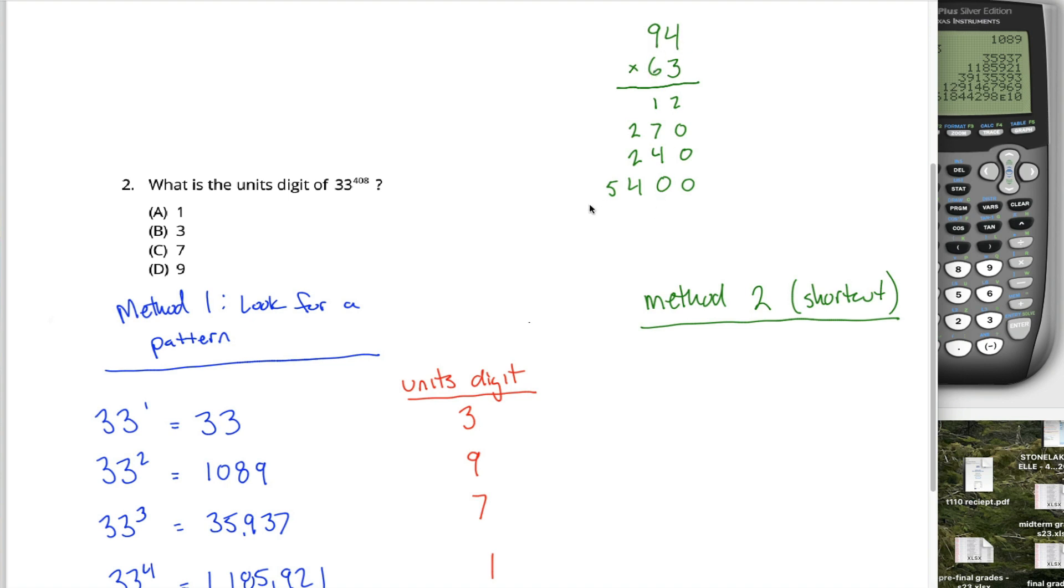You might do things slightly differently. But I bet whatever algorithm you use to do this multiplication long hand allows you to see that the unit's digit of this product is going to be this two plus a bunch of zeros.